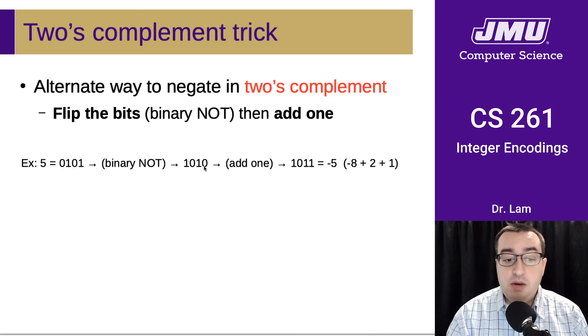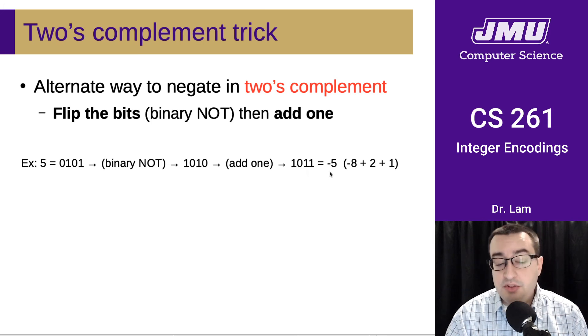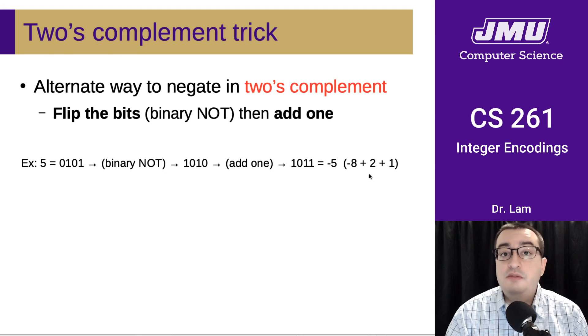And then we add 1, which gives us 1011. And so that is going to be the representation of negative 5, which is what we saw in visual form on the previous slide.